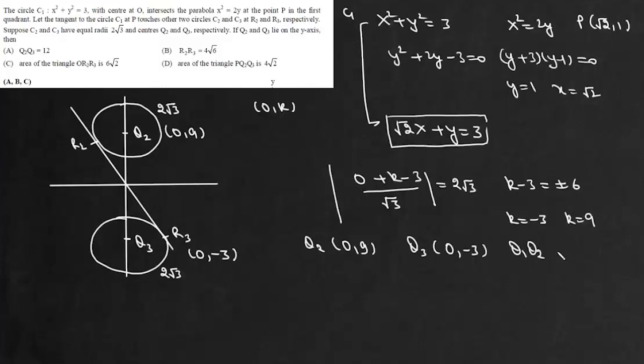We have Q₂ as (0, 9) and Q₃ as (0, -3). We can write Q₁Q₂, and Q₁Q₂ is 12. That means option A is correct.